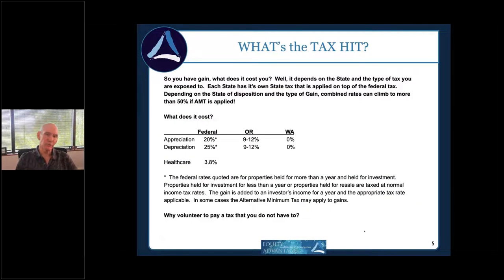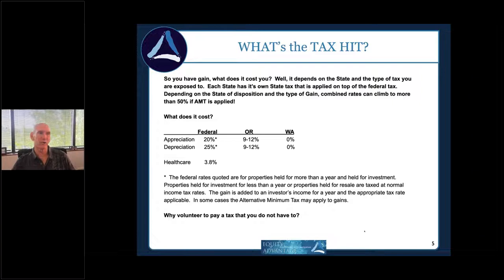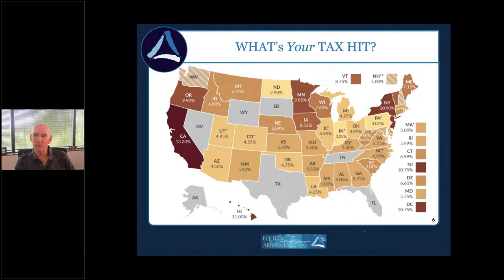Now let's talk tax costs. Appreciation on a property held under one year is taxed as ordinary income. For long-term capital gains, the federal rate is typically 20%, depreciation recapture is taxed at 25%, and state taxes apply where the property is located. There's also a 3.8% healthcare surtax if your income exceeds certain thresholds.